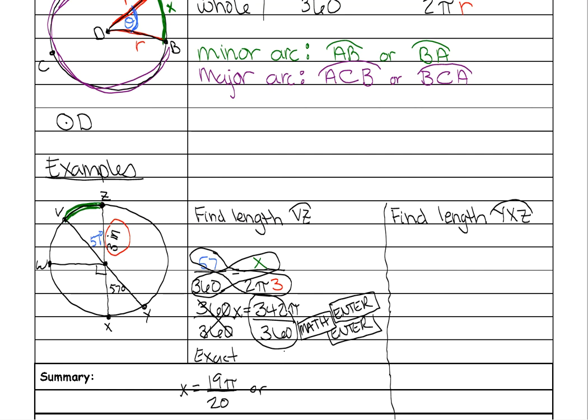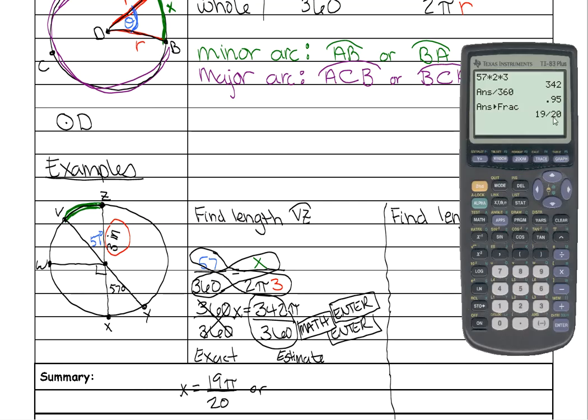Or my estimated answer would be the decimal of that. So 19 over 20. And don't forget that you have to multiply times pi. And you do need to use the pi button.